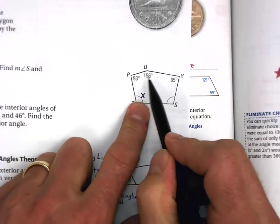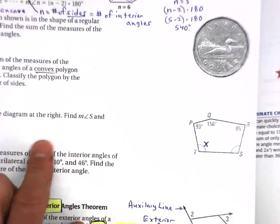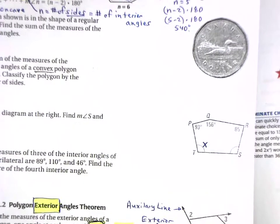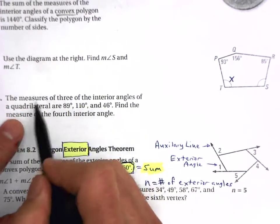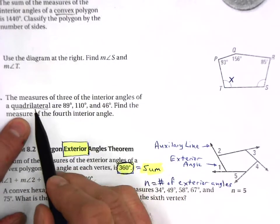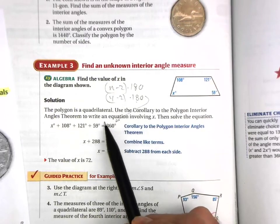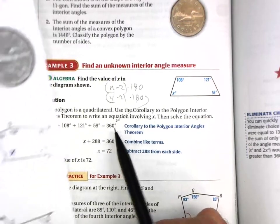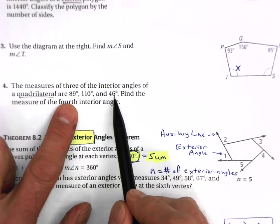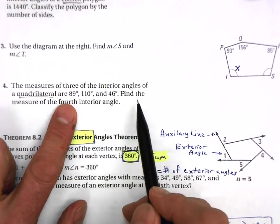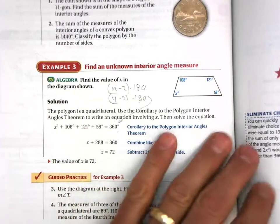So your equation is x + 93 + 156 + 85 + x = 540. Solve that algebraic equation for x. For question four, the measures of three of the interior angles of a quadrilateral are given. Since it's a quadrilateral, the sum of interior angles is 360. So set up 89 + 110 + 46 + x = 360 and solve for the fourth interior angle.